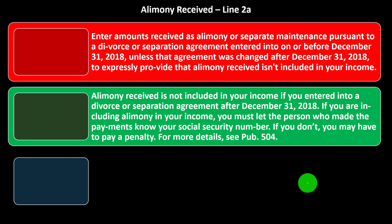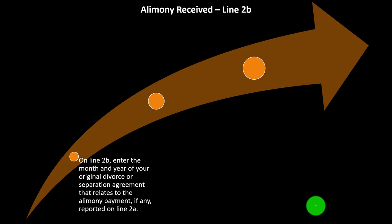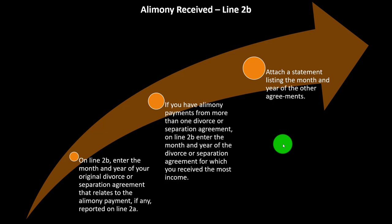It's similar to a 1099 situation — if one person paid the other and gets the deduction, they must tell the IRS who they paid so the income can be charged on the other side. If you have alimony payments from more than one divorce or separation agreement, enter the total of all alimony received on line 2a. On line 2b, enter the month and year of your original divorce or separation agreement. If you have alimony from more than one agreement, enter the one for which you received the most income and attach a statement listing the month and year of the other agreements.